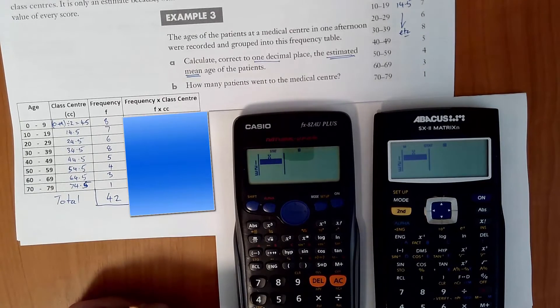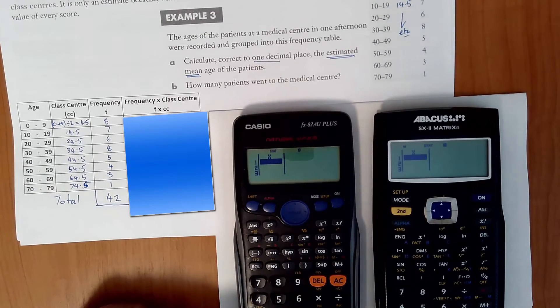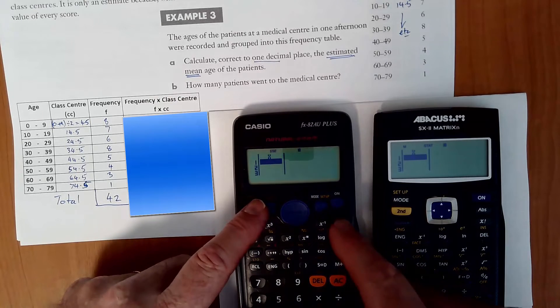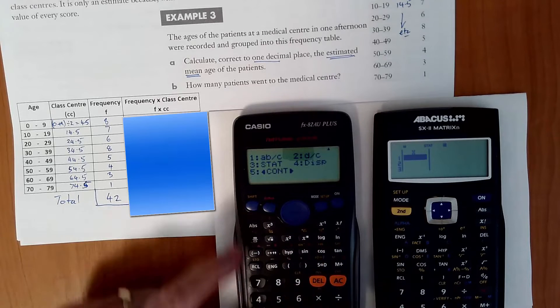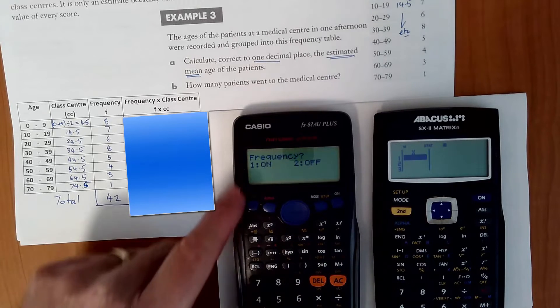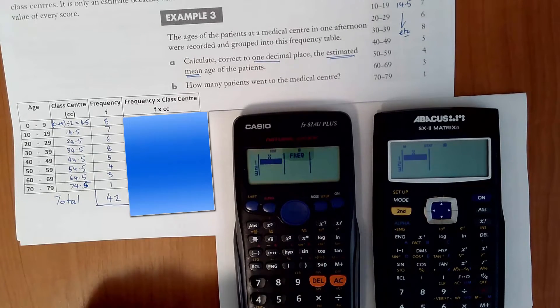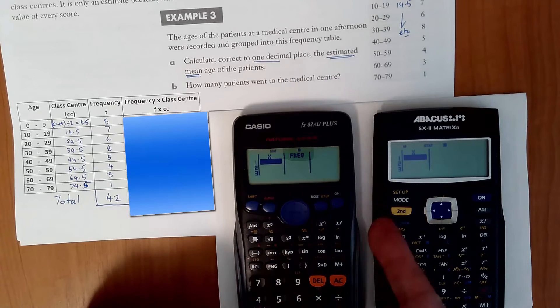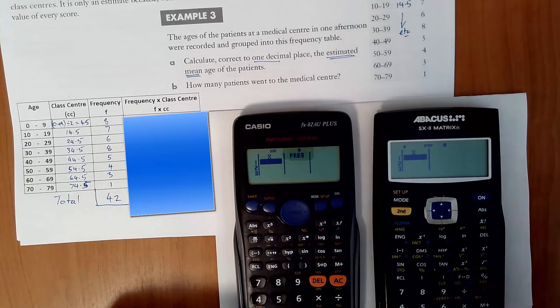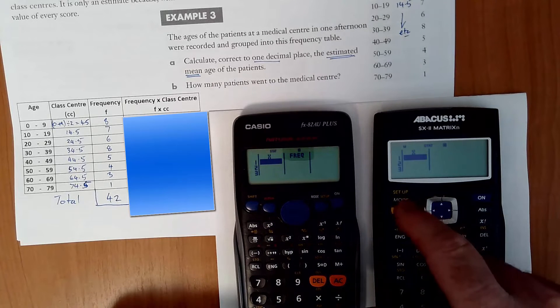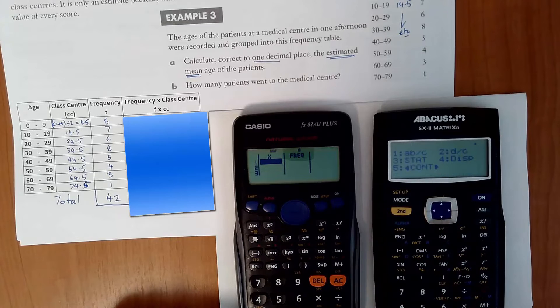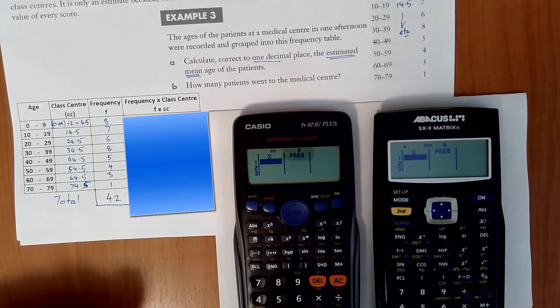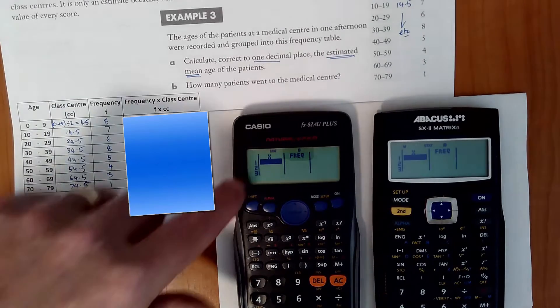What we really want is to set that up so that we've got a frequency table there. So we go into the setup, shift setup, go down, number 3 for stat. Turn the frequency column on, number 1. And then you've got the x and the freq which is the score and the frequency. Same over this side. Second function, setup, go down, number 3 for stat, number 1 for frequency on and then it's the same.